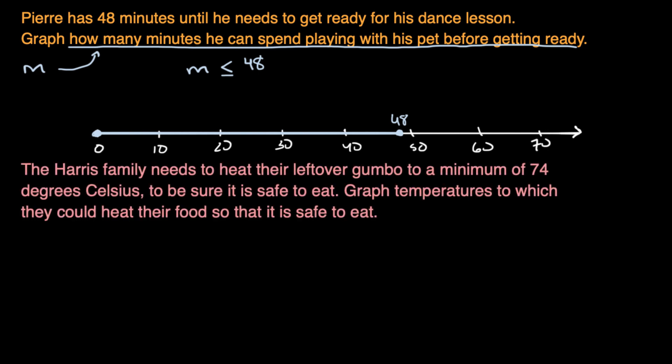So here we are told that the Harris family needs to heat their leftover gumbo to a minimum of 74 degrees Celsius to be sure it is safe to eat. Graph temperatures to which they could heat their food so that it is safe to eat. So once again, pause this video and see if you could think about that before we do this together.